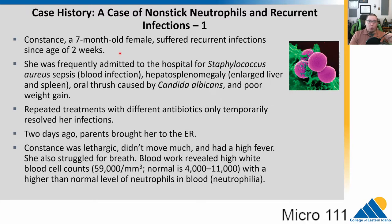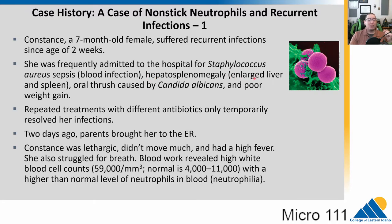We have Constance. She's seven months old and she's suffering from recurring infections since she was two weeks old. That is not great because children tend to have weakened immune systems, but they do have immune systems — they have the innate system and they shouldn't be getting sick constantly. She's frequently been admitted to the hospital for Staphylococcus aureus sepsis, which is a blood infection, hepatosplenomegaly, which is an enlarged liver and spleen. She's also had oral thrush, which is a mouth infection caused by the yeast Candida albicans, and she has not gained weight well. This repeated infection has required antibiotics that seem to temporarily resolve the infections, but they come back. Her parents brought her to the ER two days ago — she was lethargic, had a high fever, and these are all indications that an infection is occurring.